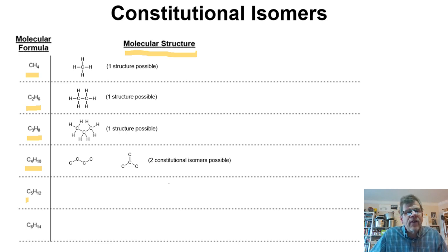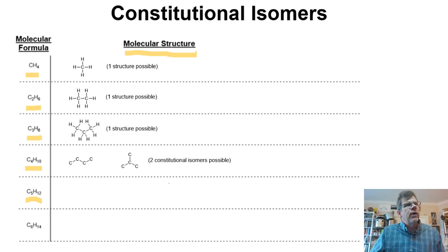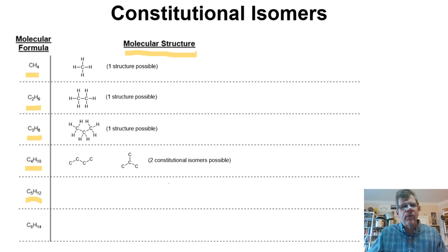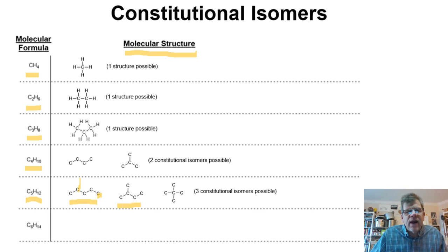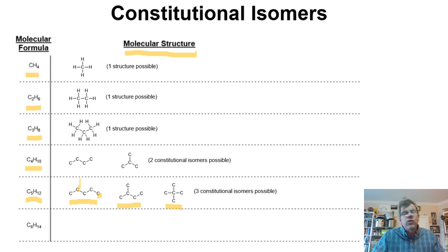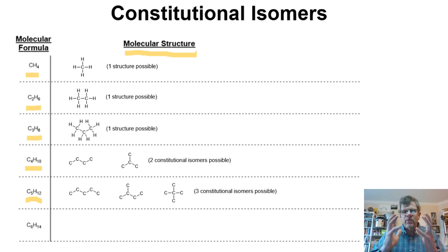For five carbons, we find there are three ways to put them together. The best approach is to take a piece of paper and start drawing — there's no trick like 2n+2 to figure this out, it's all trial and error. I always start with the linear chain and then pluck off end carbons and reposition them to diversify the connectivity. Here are the three arrangements of five carbons, with hydrogens omitted for clarity.